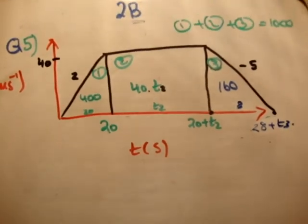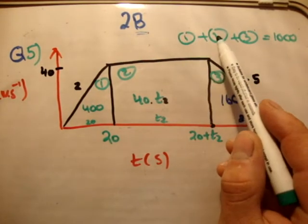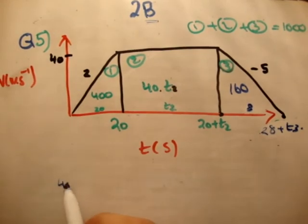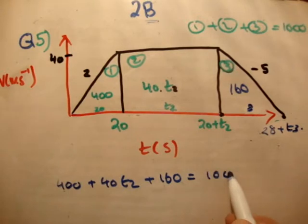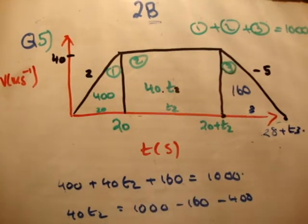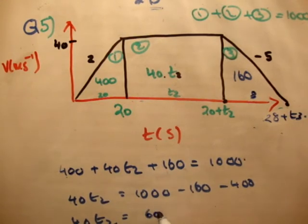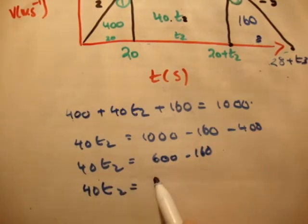Now, we're given in the question, we're told, that the total distance travel is 1,000 meters. So region 1 area plus region 2 area plus region 3 area adds up to 1,000 meters. So let's do that. So we say 400 plus 40t2 plus 160 equals 1,000. And 40t2 equals 1,000 minus 160 minus 400. 40t2 equals 1,000. Sorry, not 1,000. 600 minus 160. 40t2 equals 440.